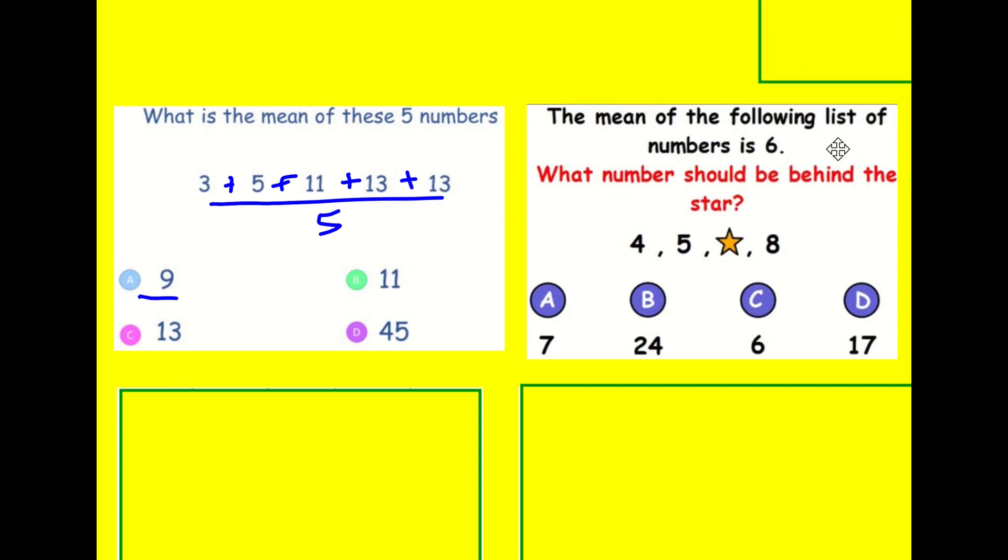What if I flip it around and tell you the mean of some numbers is 6, then what should this starred number be? Well, in this case, if I add all the numbers up and divide by how many there are to get the mean, if I've got the mean and I know how many there are, I can work out what they add up to by doing 6 times 4, the amount that I have. And that's going to give me 24. So I can then add the rest up and do 24 minus 17. So the answer is going to be 7.